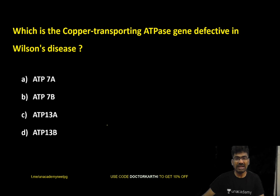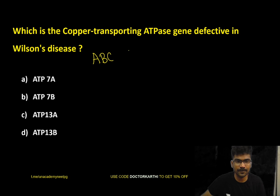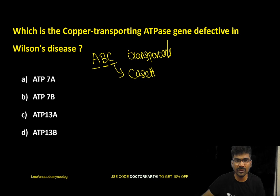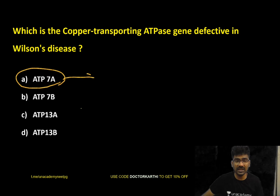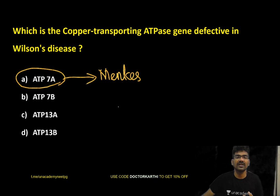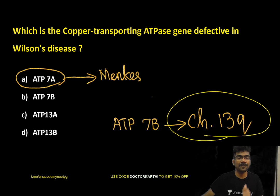Which copper-transporting ATPase gene is defective in Wilson's disease? These are ABC transporters — ATP binding cassette transporters — which require ATP for transport, making this an example of active transport. ATP7A is mutated in Menkes disease, while ATP7B is defective in Wilson's disease, located on chromosome 13.